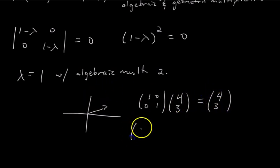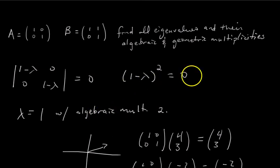You can test that. 1, 0, 0, 1 times negative 2, 1, for example. It's just negative 2, 1. So the one eigenspace, meaning the subspace of vectors that are eigenvectors with eigenvalue 1, is any vector in this xy plane. So the one eigenspace is two-dimensional. So we say that geometric multiplicity of lambda equals 1 is 2.